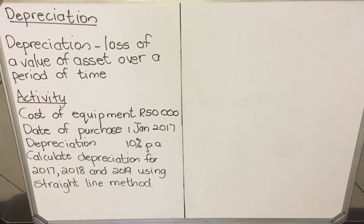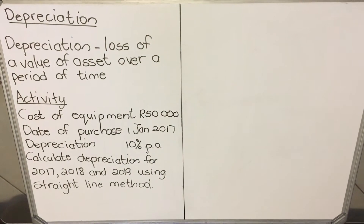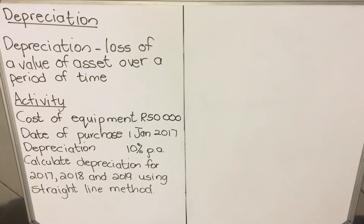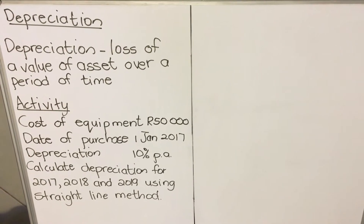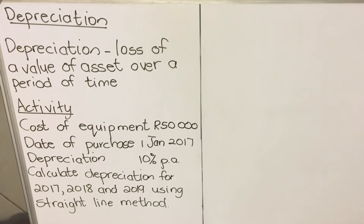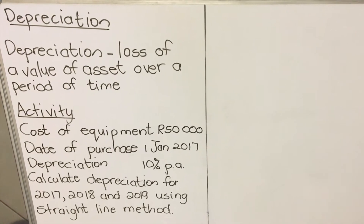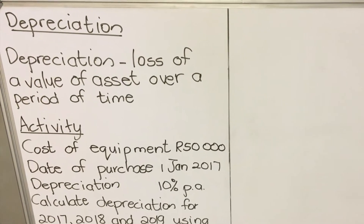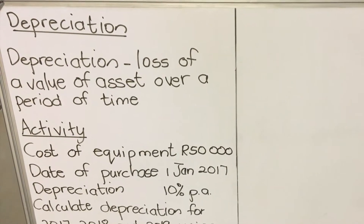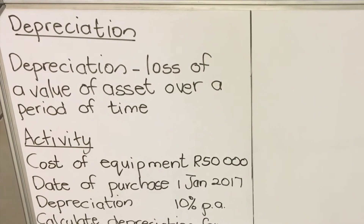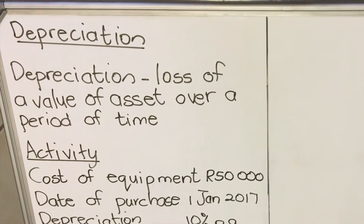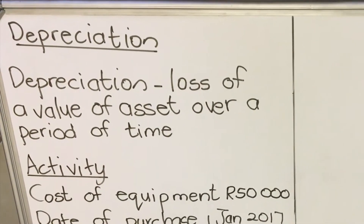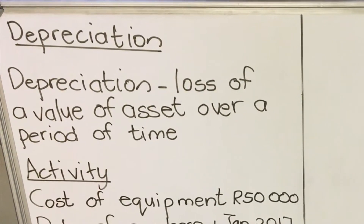Hello everyone, this is a lesson on depreciation. The definition of depreciation is that assets lose value over a period of time — when they lose value, we say they depreciate. In this video we're going to look at an example of calculating depreciation using the straight-line method, and then we'll do another video using the other method.